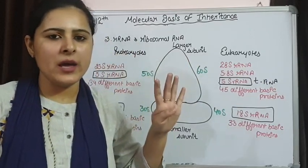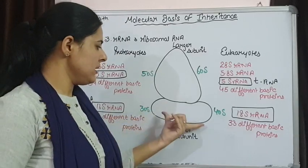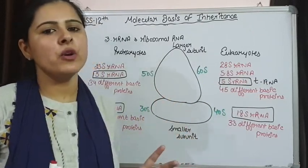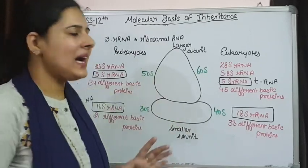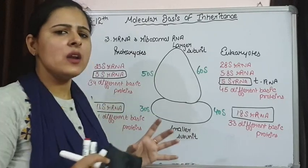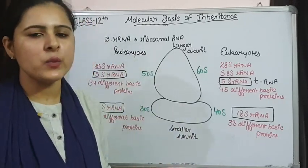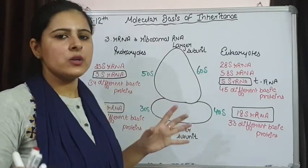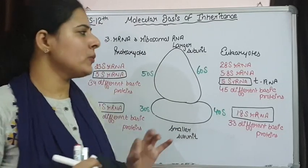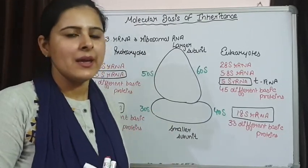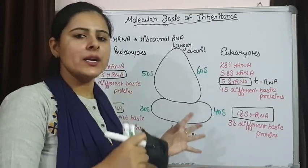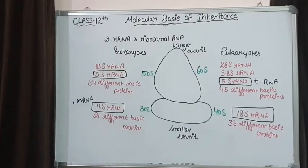The 5S rRNA in the larger subunit of eukaryotes and 23S rRNA in prokaryotes are going to bind with tRNA. So mRNA is going to interact with the smaller subunit and tRNA is going to interact with the larger subunit. We are having all three types — mRNA, rRNA, and tRNA — all three are going to interact and they will be involved in the process of protein synthesis. Other than these three types of RNA there are many more different types of RNA present in small amounts playing some important roles, but we are not required to talk about them. We have just discussed the three important types of RNA which are going to play an important role during the process of protein synthesis. In the next class we will see the process of transcription — how RNA is formed.